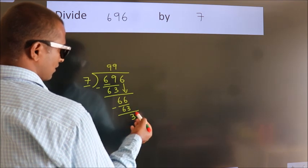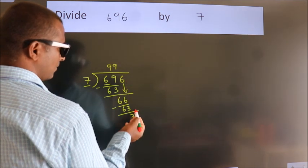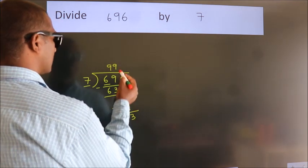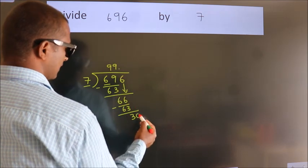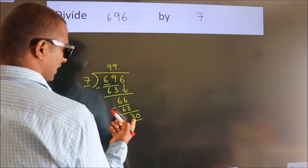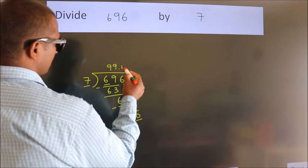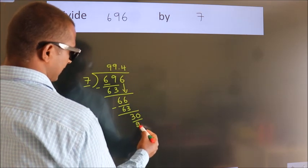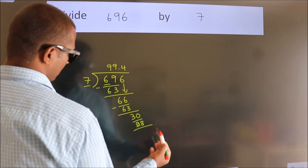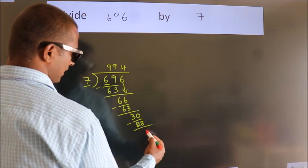After this, no more numbers to bring down. So what we do is we put a dot and take 0, so 30. A number close to 30 in the 7 table is 7 fours, 28. Now we subtract. We get 2.